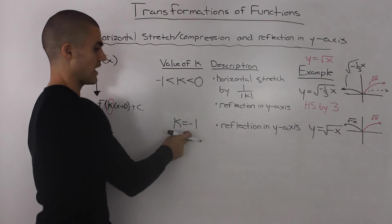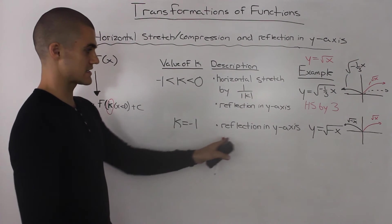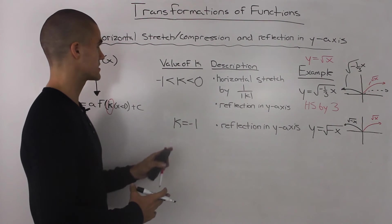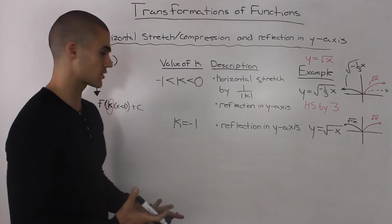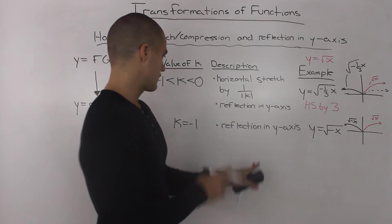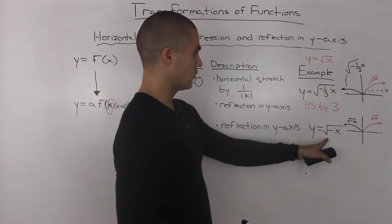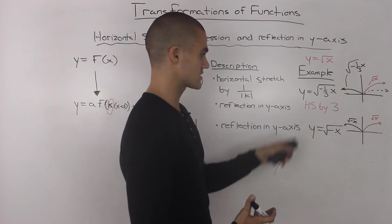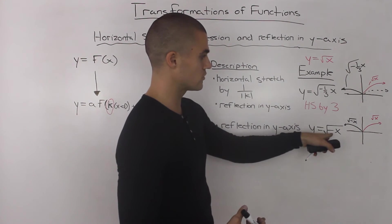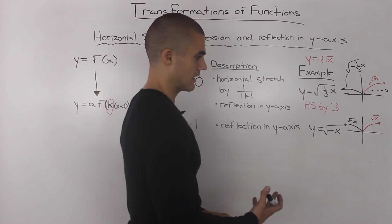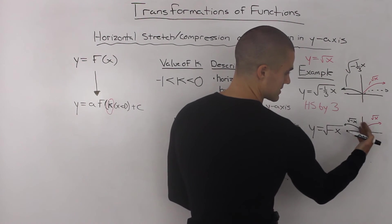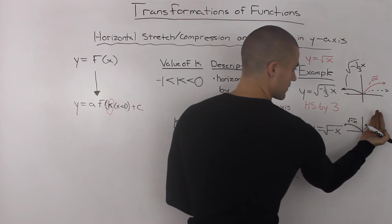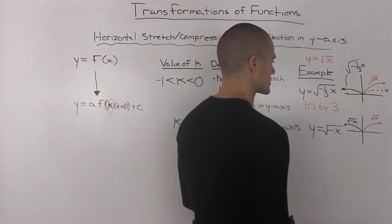Moving on to the next case, it's very simple. If k is equal to negative 1, all that means is that the function just undergoes a reflection in the y-axis — no horizontal stretch or compression. So with the parent function square root of x, the transformed function would be the square root of negative x, which looks the same as the original but reflected in the y-axis.